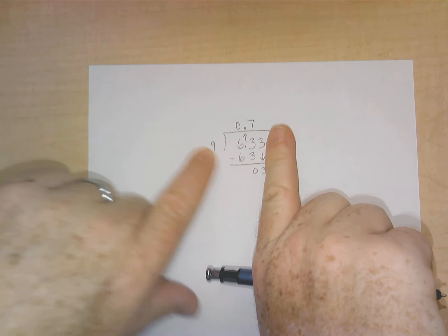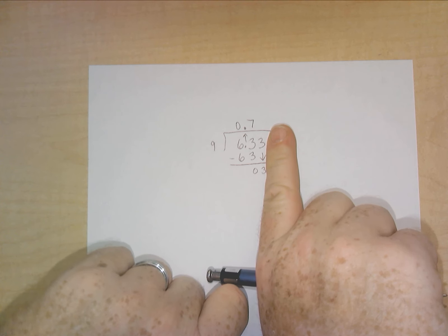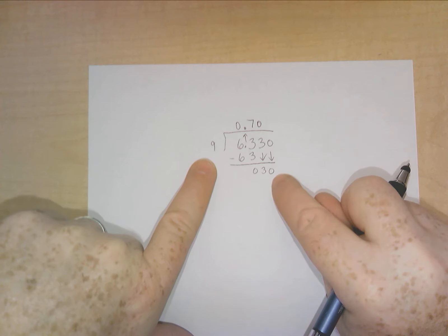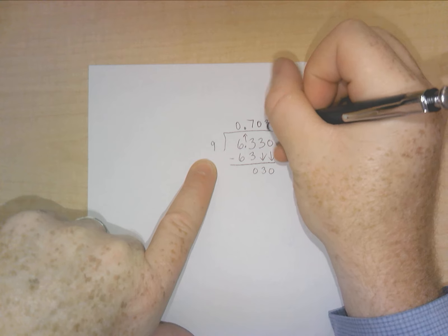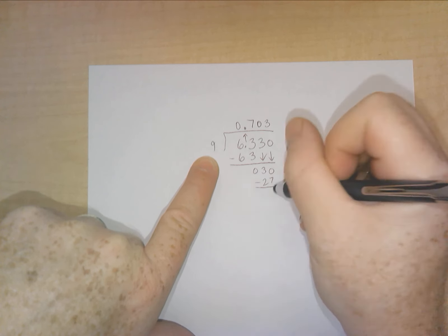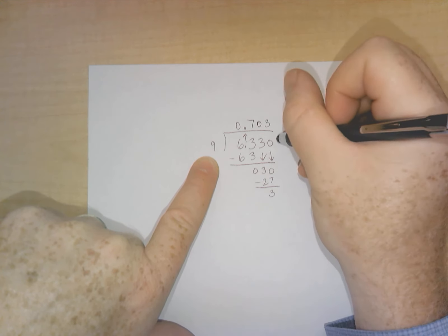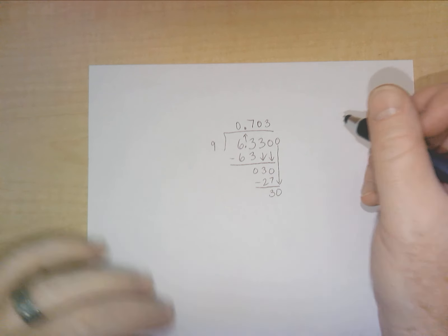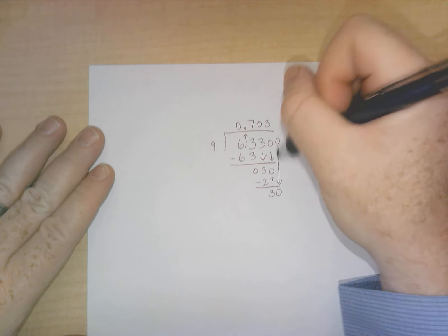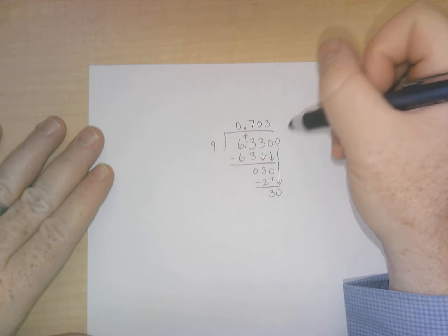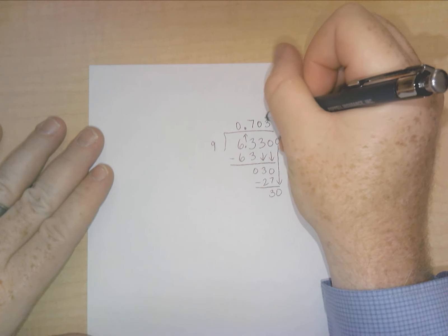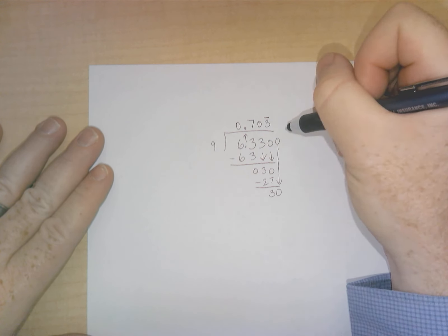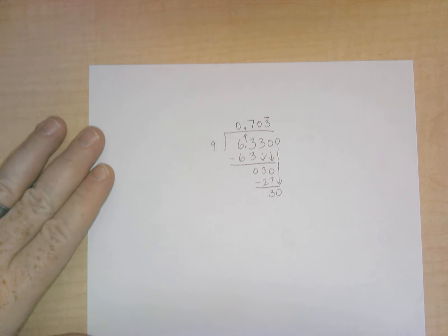And then what we do is add a 0. Bring that down. Before I do that, 9 cannot go into 3, by the way. So that's going to be a 0. Now, bring down the 0 here. 9 goes into 30 three times. 27. And then you've got 3. Add another 0. Bring it down. If you notice, this keeps repeating. And we haven't talked about this yet, but on a test, you're not going to have a repeating decimal like this. But if you do, you're going to put a line above the 3. Because what happens is it's going to continue to say 3, 3, 3. And it's just going to go into infinity.